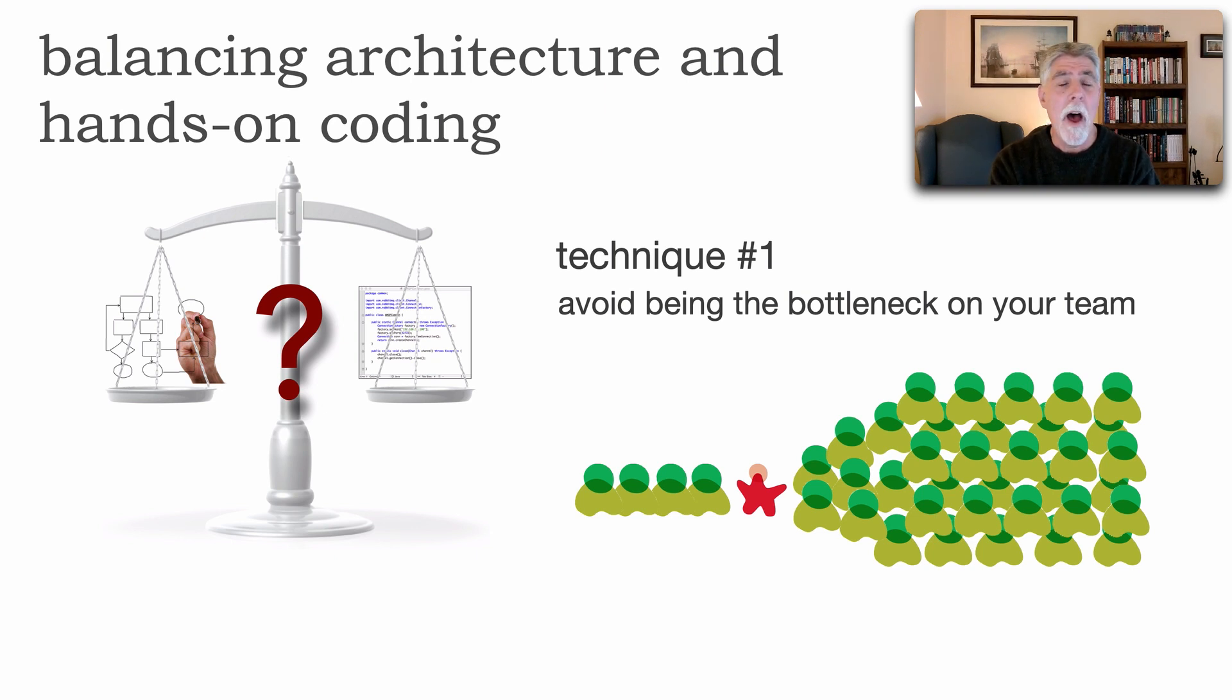Three wonderful things happen. First of all, I'm still writing production code. That's a win. But number two, I no longer own the infrastructure or framework code or shared code. And therefore, I'm not a bottleneck on my team. Win. Also, the team now owns that framework. They understand it and can maintain it. They don't have to rely on me to do that. That's a win.